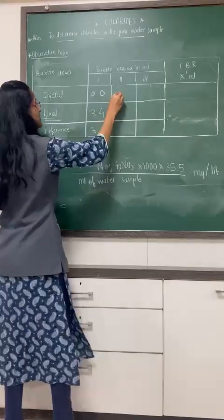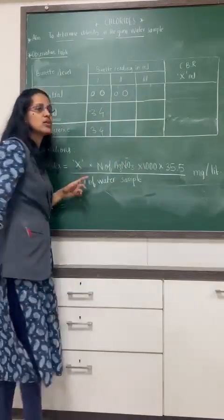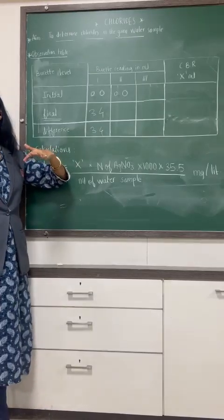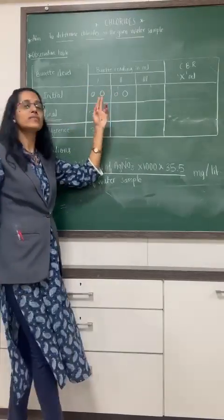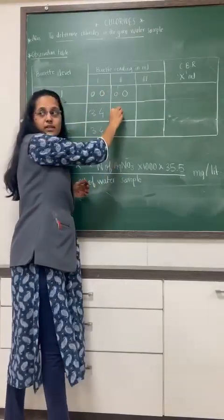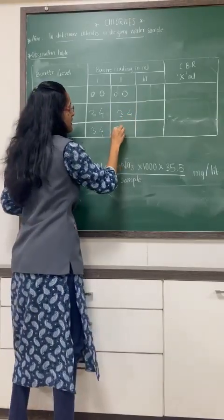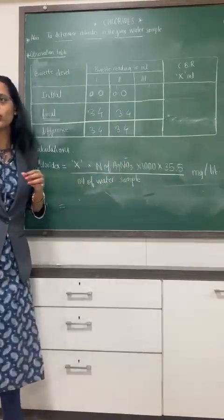So again, you have taken the second set. You have started with zero initially. Final it is 3.4. Difference is 3.4.